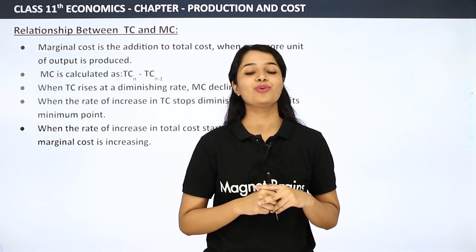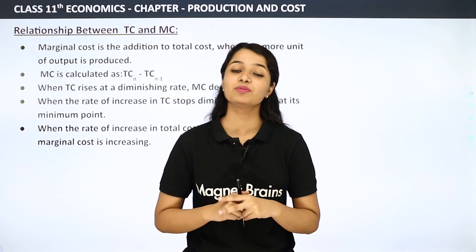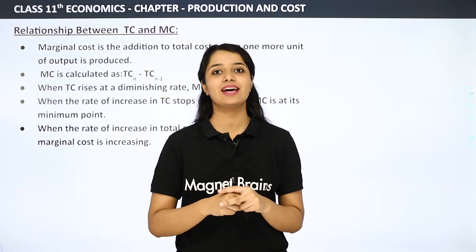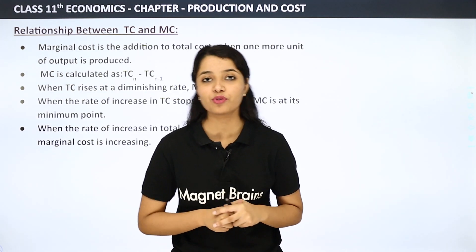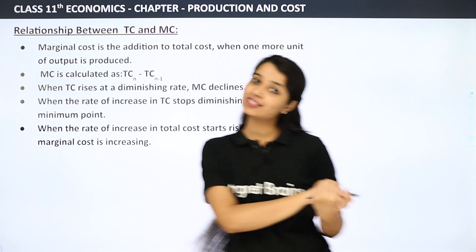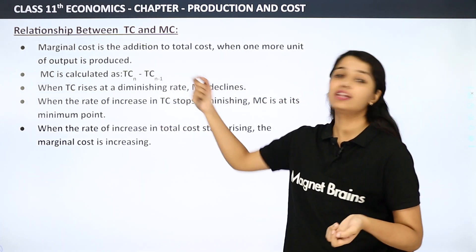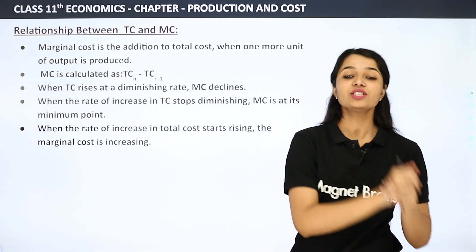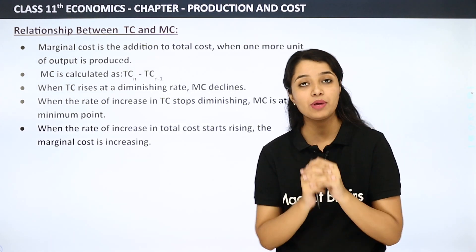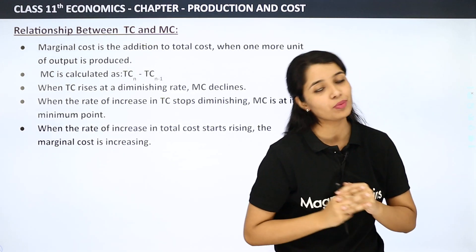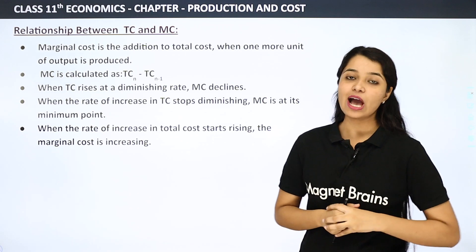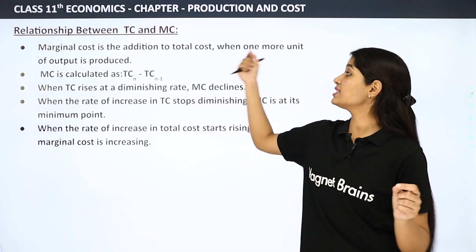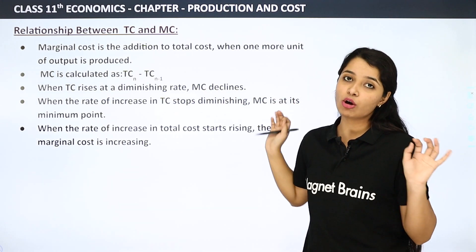Hello students, this is Sakshya Vashnoy and welcome to Magnet Brains, where you will get all subjects from 4th to 12th class free of cost. Now we will see the relationship between TC and MC — that is, total cost and marginal cost. Marginal cost is the addition to the total cost.